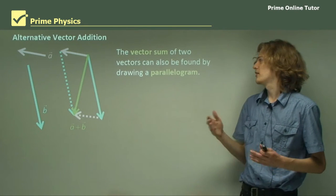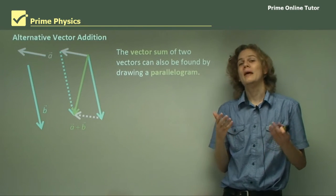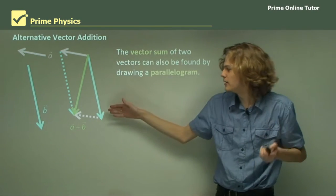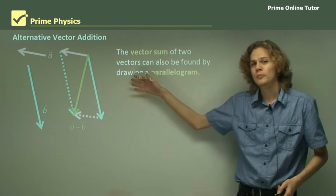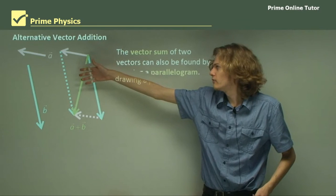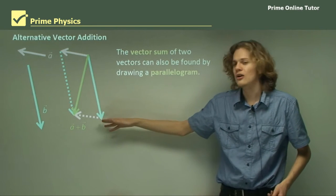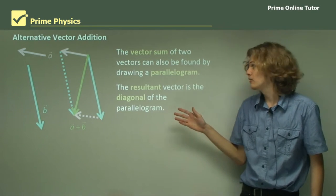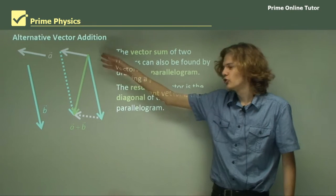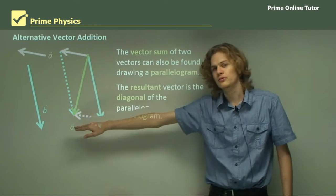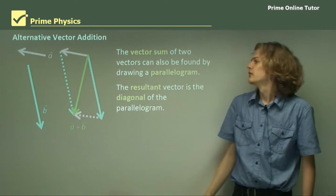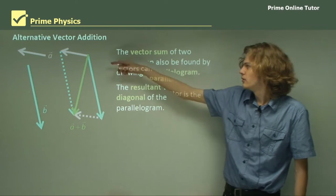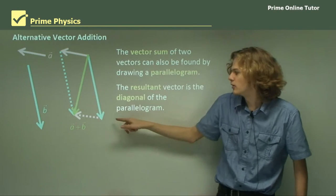Now the vector sum of two vectors can also be found by drawing a parallelogram. Here we have vector A and vector B, and we've drawn a parallelogram by drawing a copy of B and a copy of A. In this case, the resultant vector is the diagonal of the parallelogram, moving from the start to the end — equivalent to the triangle where we would have A plus B.